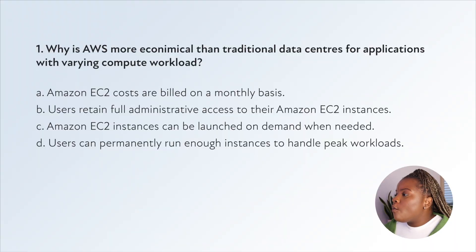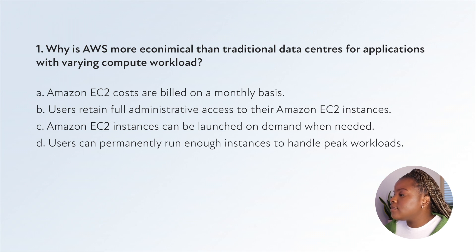Question one: why is AWS more economical than traditional data centers for applications with varying compute workloads? Option A is that Amazon EC2 costs are billed on a monthly basis. We actually know that Amazon EC2 on-demand instances are not billed monthly but by hour or second depending on the instance you run, so from the get-go we know that's wrong.